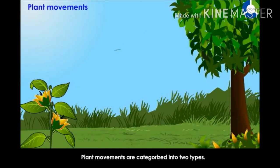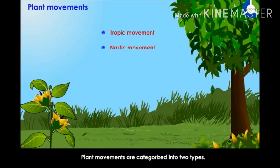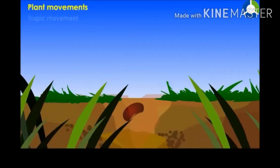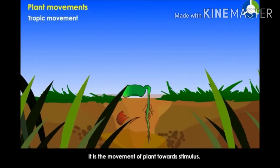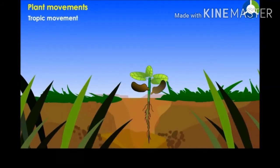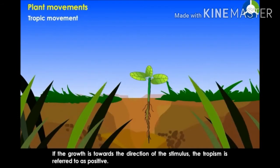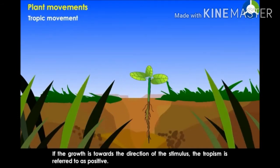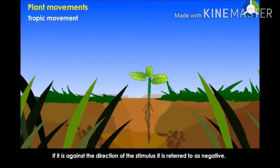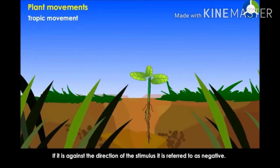Plant movements are categorized into two types: tropic movement and nastic movement. Tropic movement is the movement of a plant towards or away from a stimulus. If growth is towards the direction of the stimulus, the tropism is referred to as positive. If it is against the direction of the stimulus, it is referred to as negative.